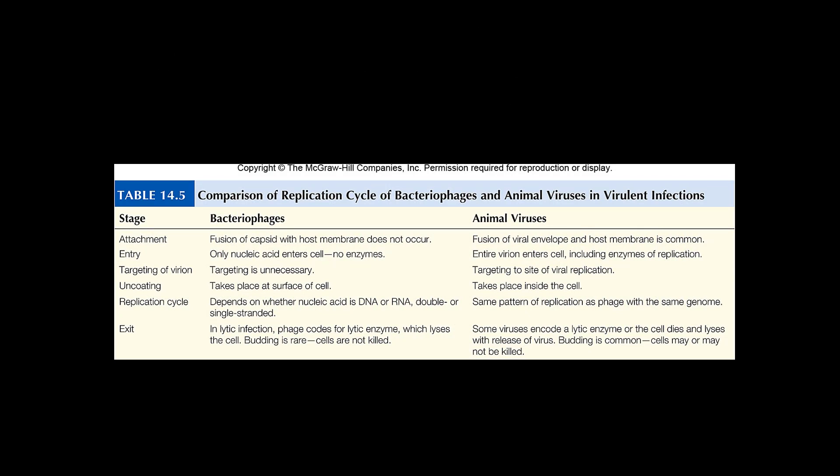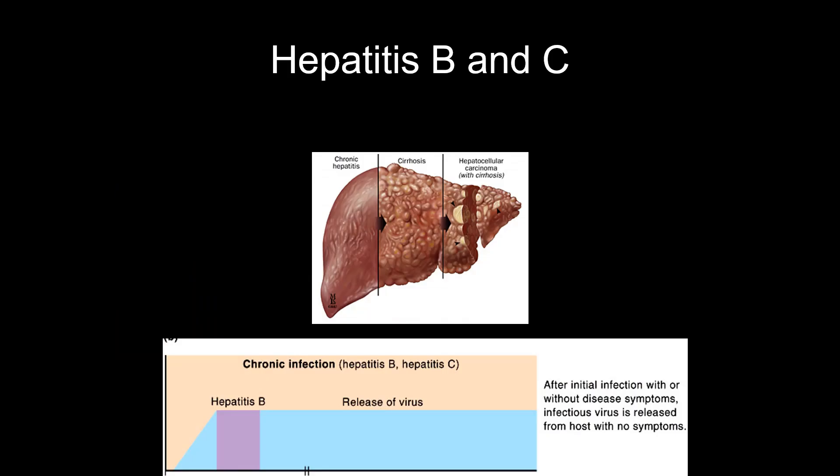This table shows a comparison of viruses that affect bacteria (bacteriophages) versus viruses that infect animal cells. Those are the main two that the book covers, though plant viruses and fungal viruses also exist. We focus on these two because we're in microbiology and we are animals.